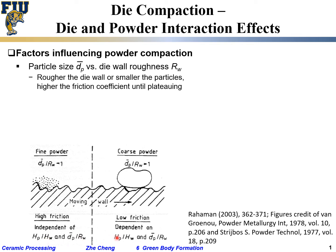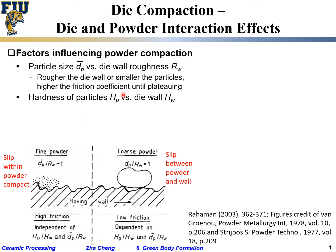For coarse particles, hardness also matters. For smaller particles, slip occurs within the powder and at the wall. So other than size, hardness between the particle and the wall material matters. The harder the die wall — meaning the wall does not change shape or deform — the lower the friction.